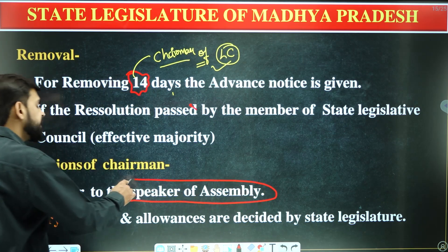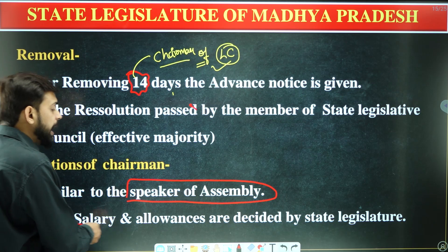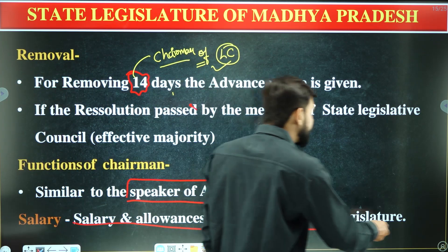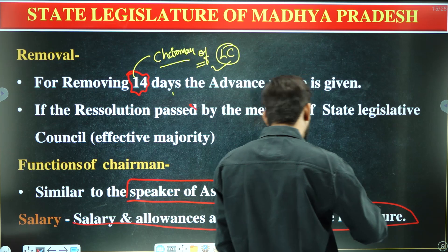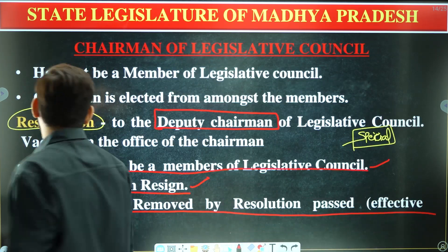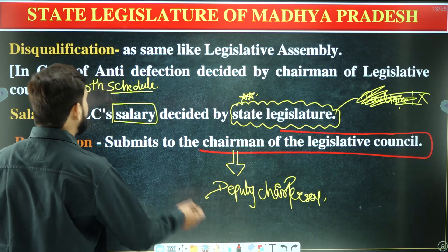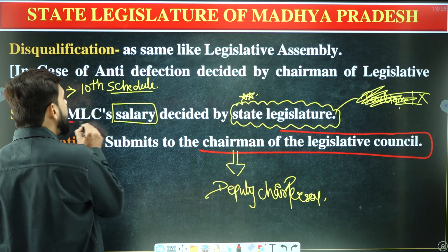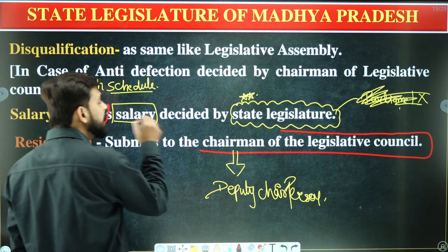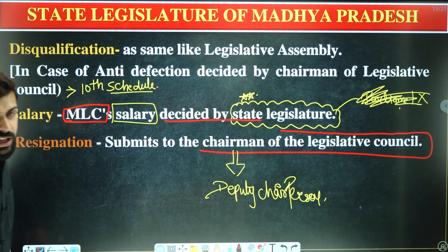The functions of the Chairman of the legislative council are similar to those of the Speaker in the assembly. The salary and allowances of MLCs are decided by the state legislature.